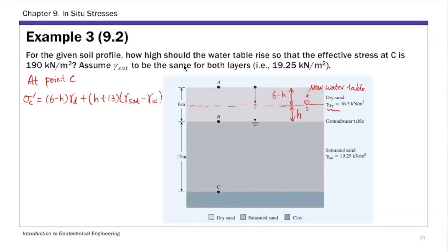And we want this new value to be 190, so that's 190 kilonewton per meter squared. Then substitute the unit weights into this expression. The unit weight of water in SI system is 9.81, so this is gamma water.